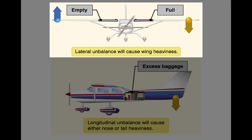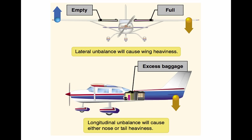Location of the CG with reference to the lateral axis is also important. The pilot must be aware that adverse effects arise from a laterally unbalanced condition. In an airplane, lateral unbalance occurs if the fuel load is mismanaged by supplying the engine unevenly from tanks on one side. The pilot can compensate by adjusting trim or holding a constant control pressure, but this places controls in an out-of-streamline condition, increases drag, and results in decreased operating efficiency. Since lateral balance is addressed in the AFM, further reference to balance in this handbook means longitudinal location of the CG.